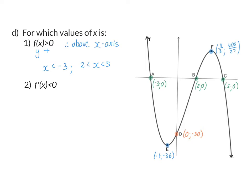Question: for which values of x is F'(x) smaller than zero? F'(x) < 0 means the gradient is negative, so the question is where is the graph decreasing? The graph is decreasing up to the first stationary point at E, and then again after the second stationary point at F. So we have two parts: x < -1, or x > 11/3.